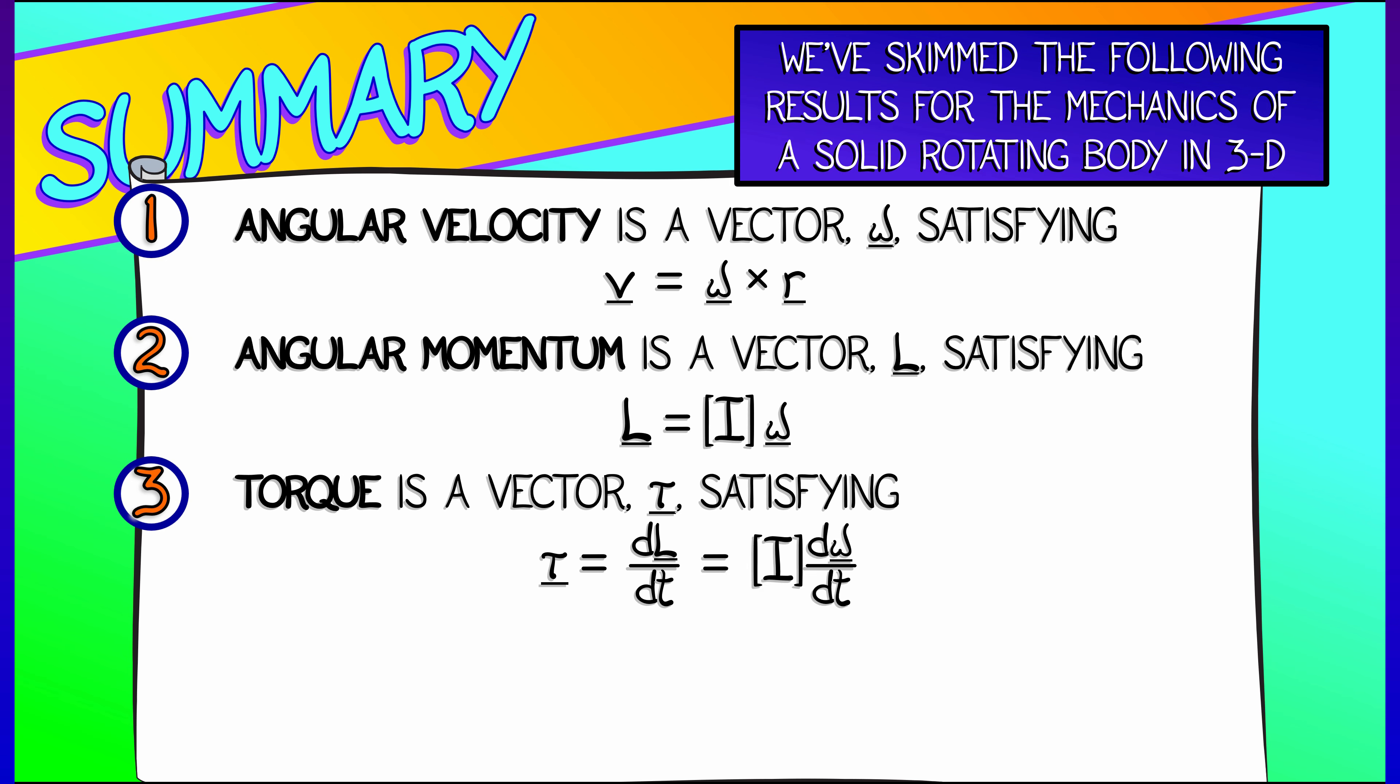And lastly, we just went over the fact that kinetic energy for a rotating body is one half omega dot i omega. That's really just the beginning of the very long and beautiful subject of solid body mechanics.